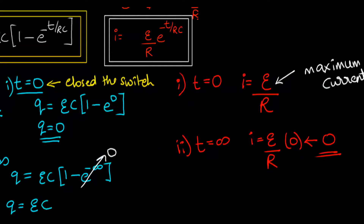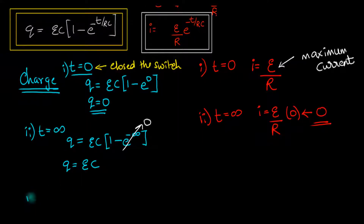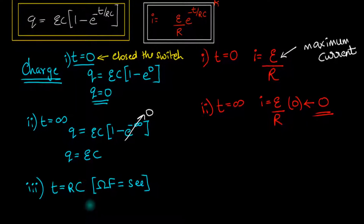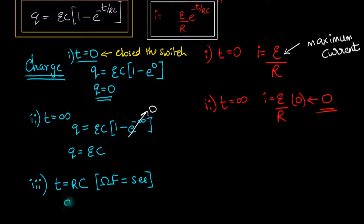Now I'm going to take one more case — for a particular time. What we're going to do is wait for a time exactly equal to RC. The reason I'm putting RC is because there's an RC in the denominator, so if I put RC in the numerator I get minus 1. Notice that R times C has units of ohms times farads, which is just seconds. So RC is an expression in seconds — it's a unit of time. Let's see what happens to the charge when we substitute T equal to RC.